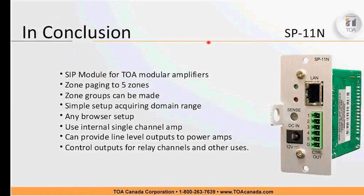In conclusion: TOA now has integration into VoIP phone systems with five zones — groups can be made depending on how many zones you've selected. It's very simple to acquire the domain range from the phone system, inheriting and announcing an IP address. Any browser on any computer can be used. The module uses the internal single-channel amp of the host amplifier, can provide line level outputs for higher power configurations, and the control outputs for relay channels can be used for anything — turning lights on, activating a siren, controlling screens — not necessarily just voice paging.